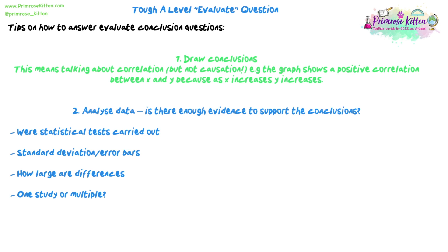For example: 'The graph shows a positive correlation between x and y because...' — that's your justification for why, if they ask what bits of the data support the conclusion. So yes, it supports the conclusion because, and then you give some evidence from the data. If they're saying they expected this drug to increase a factor, and you can see that increase in the graph because the drug was added, then that's your supporting point.